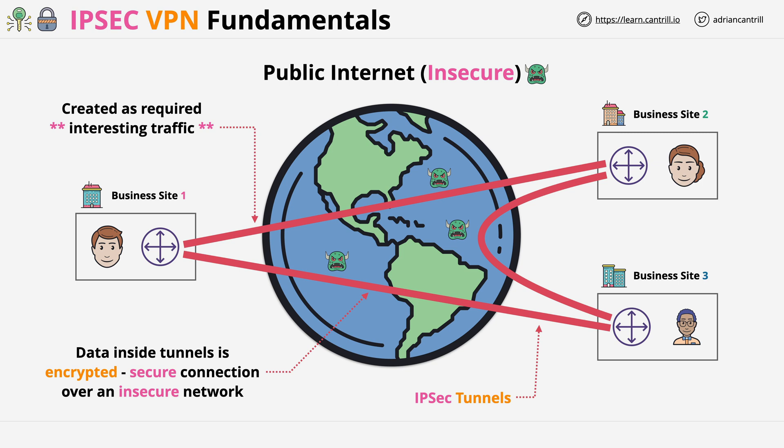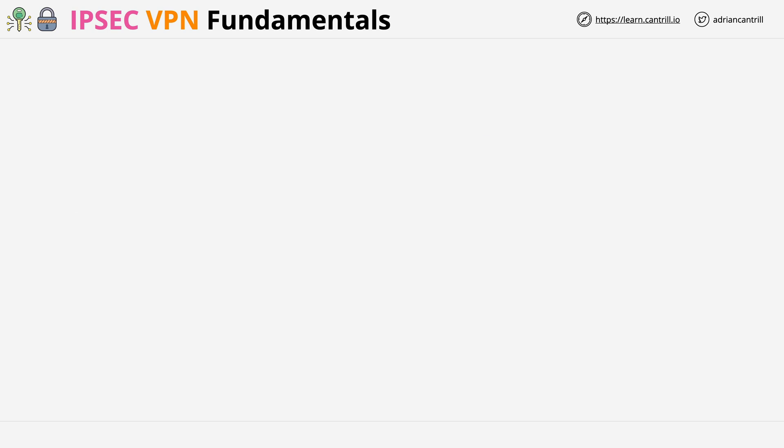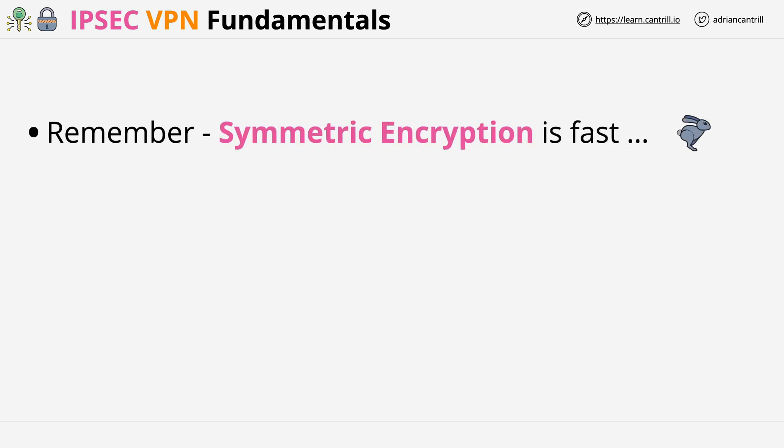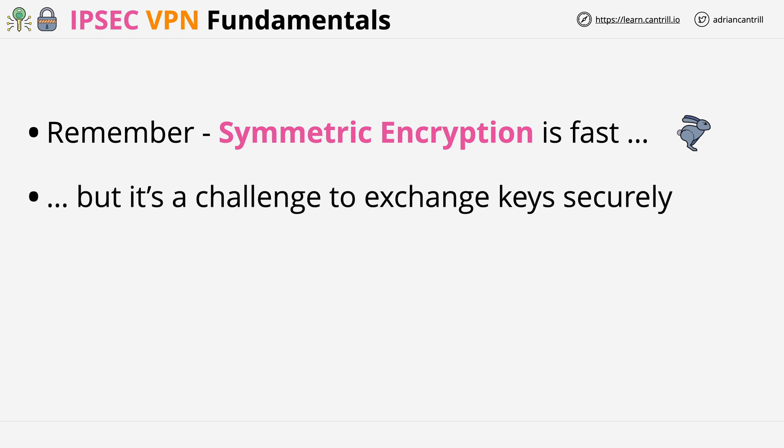To understand the nuance of what IPsec does, we need to refresh a few key pieces of knowledge. Symmetric encryption is fast and has pretty low overhead, but exchanging keys is a challenge — the same keys are used to encrypt and decrypt. So how can you get the key from one entity to another securely? Do you transmit it in advance over a different medium, or encrypt it? If so, you run into a catch-22: how do you securely transmit the encrypted key?